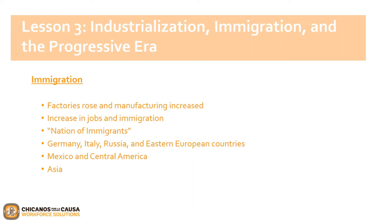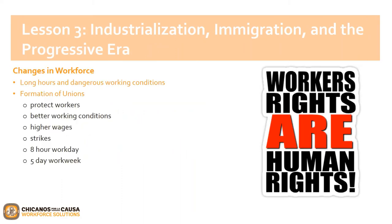Immigrants from Asia were not as abundant due to laws forbidding them to migrate to the United States. Despite those laws, many Japanese came and sought jobs in mining and agriculture. America's factory workers, whether native or foreign-born, were working long hours in dangerous conditions with no protections from the abuse they were enduring. As a result, unions were created.